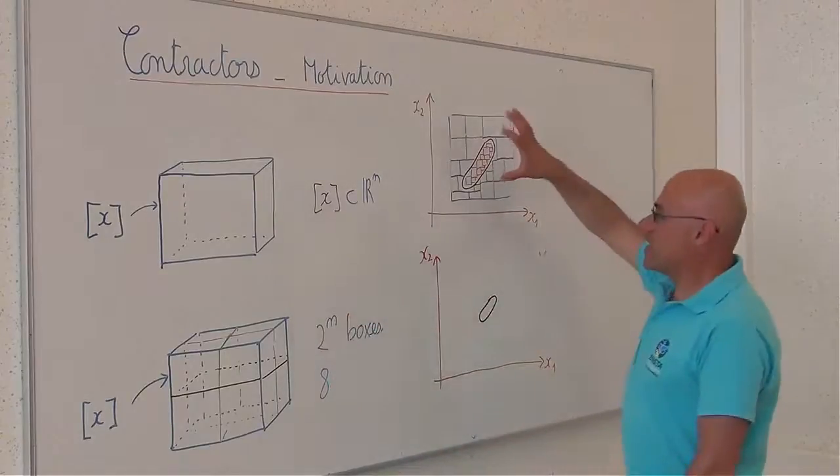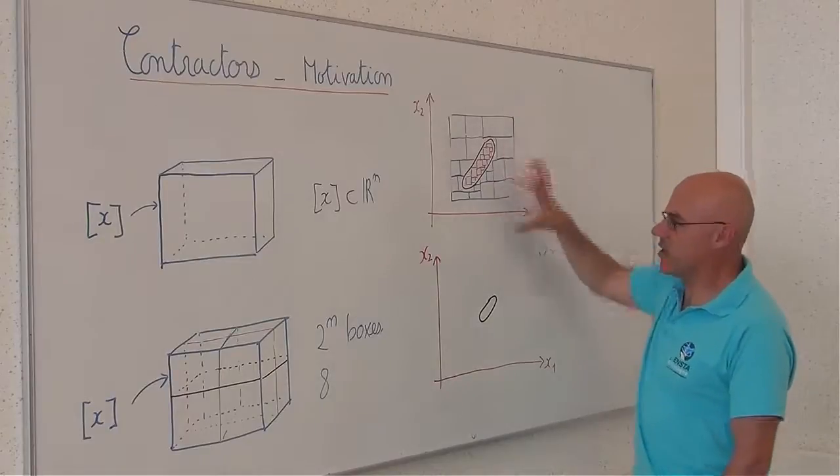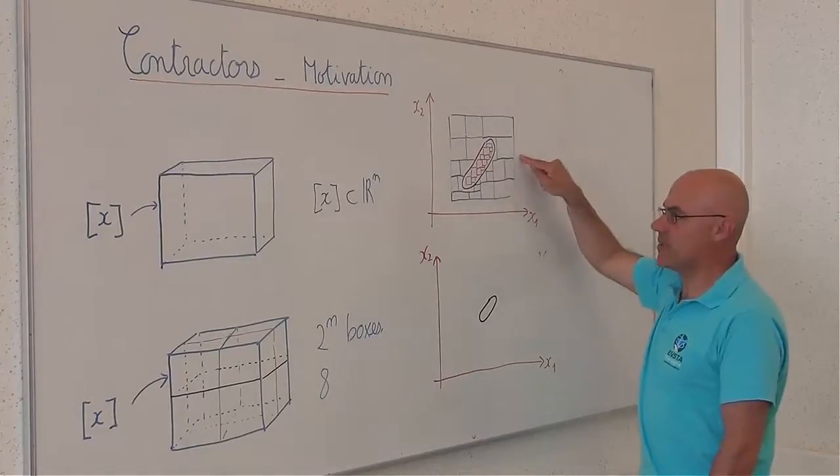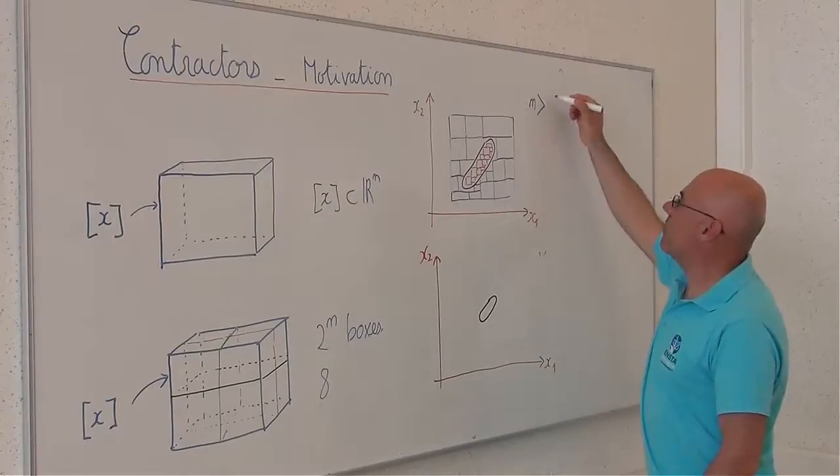So, as a consequence, a SIVIA-like algorithm, which will bisect in all directions, are not possible for n greater than 5, for instance.